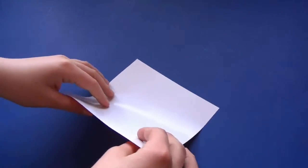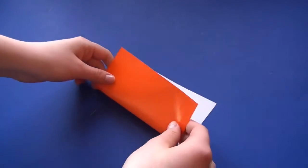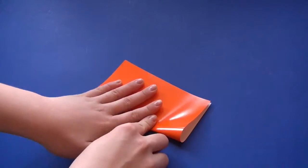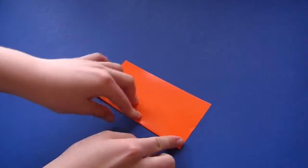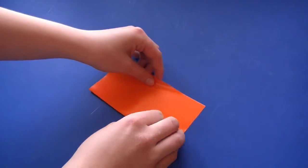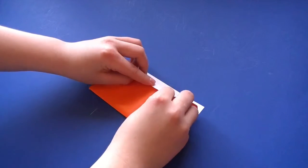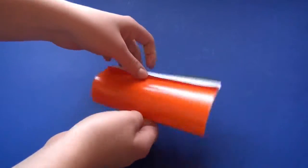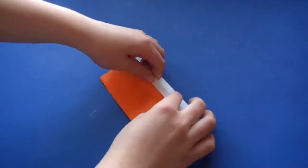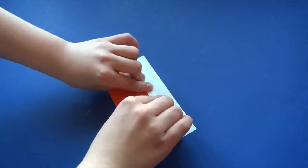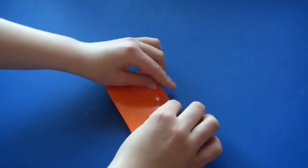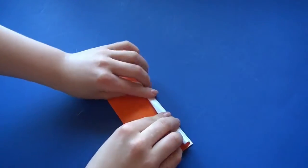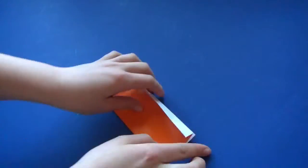Fold the paper in half like this and take the top and bend it down like this. Once more, flip it over and do the same thing on this side like that.